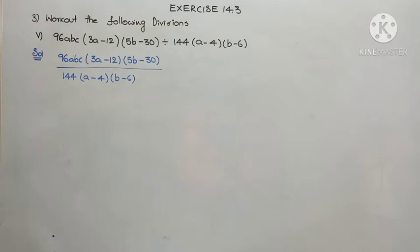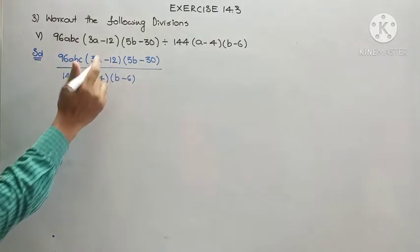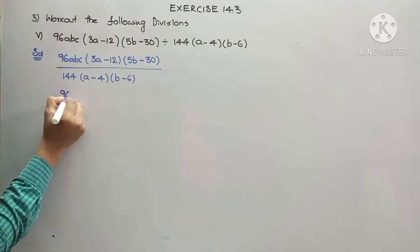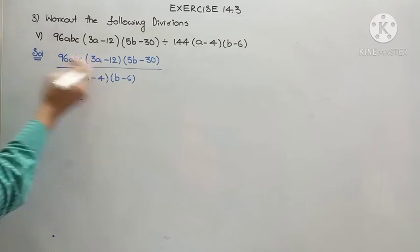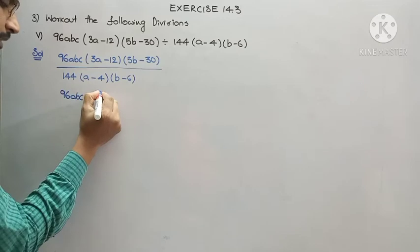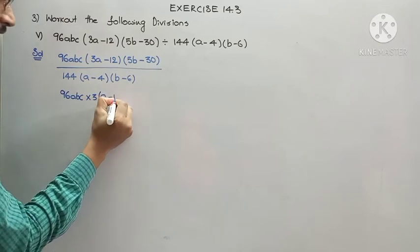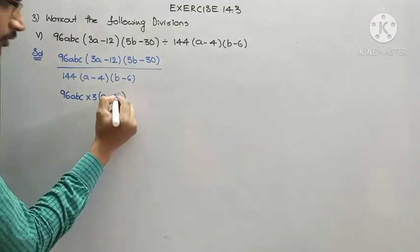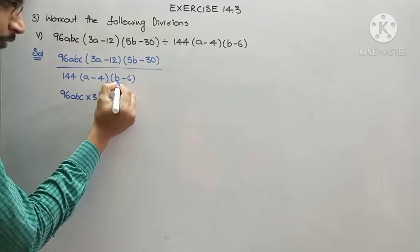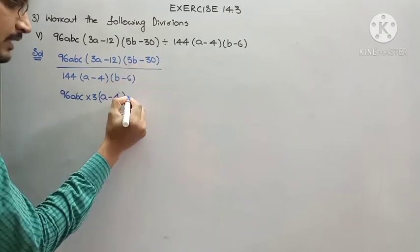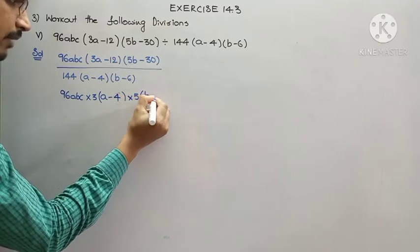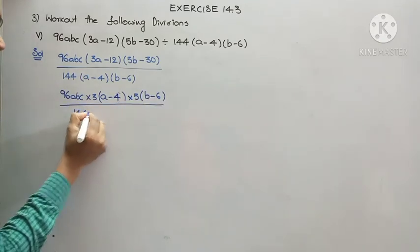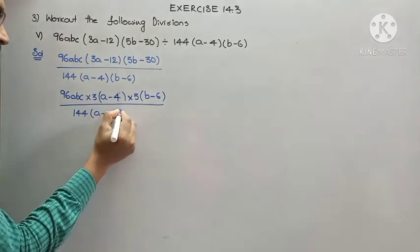In the numerator we have 96abc. Checking the bracket (3a minus 12) against the denominator term (a minus 4): if we bring out 3 as common from (3a minus 12), we get 3(a minus 4), because 3 times 4 gives 12. For the term (5b minus 30), in order to match (b minus 6) in the denominator, we bring out 5 as common, giving 5(b minus 6).